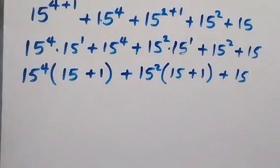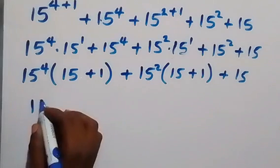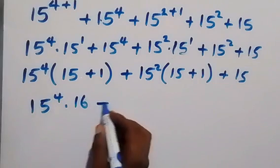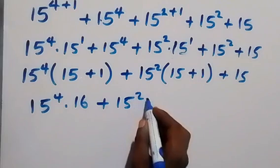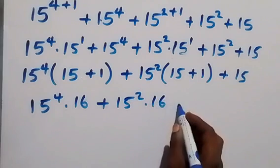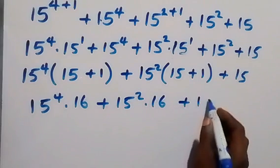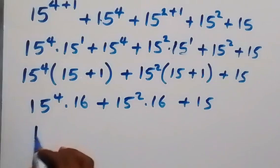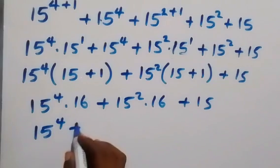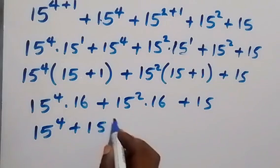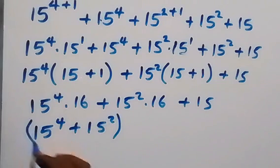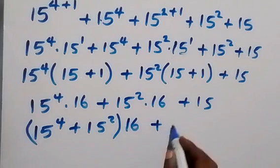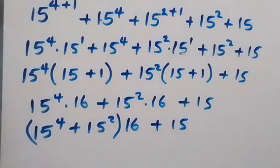In the next step, let's add this together. This is 15 to the power 4 multiplied by 16, then plus 15 to power 2 multiplied by 16 as well, then plus 15. This 16 is common — let's take it out of the bracket — so we have 15 raised to power 4 plus 15 squared in brackets, times 16, then plus 15.